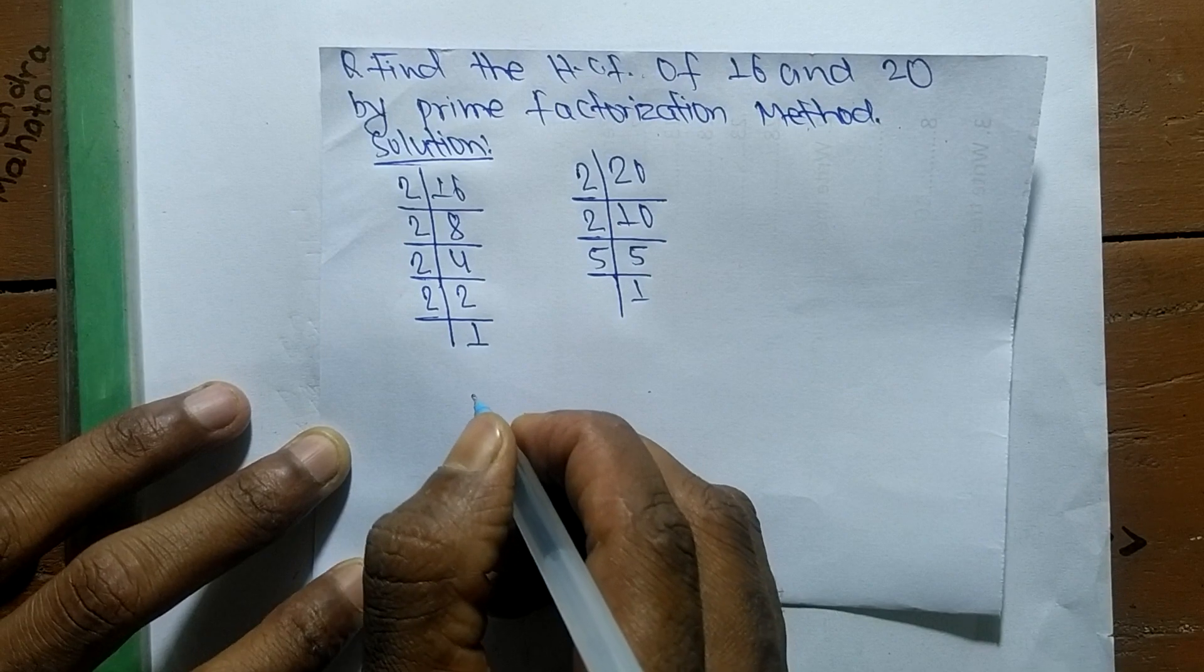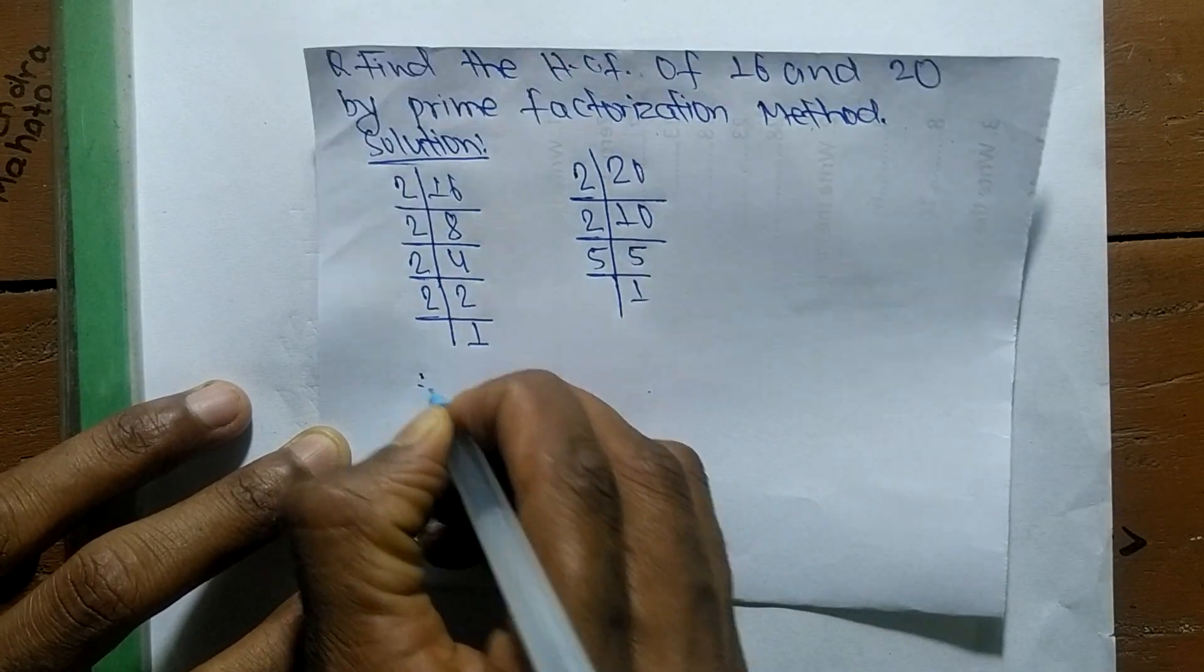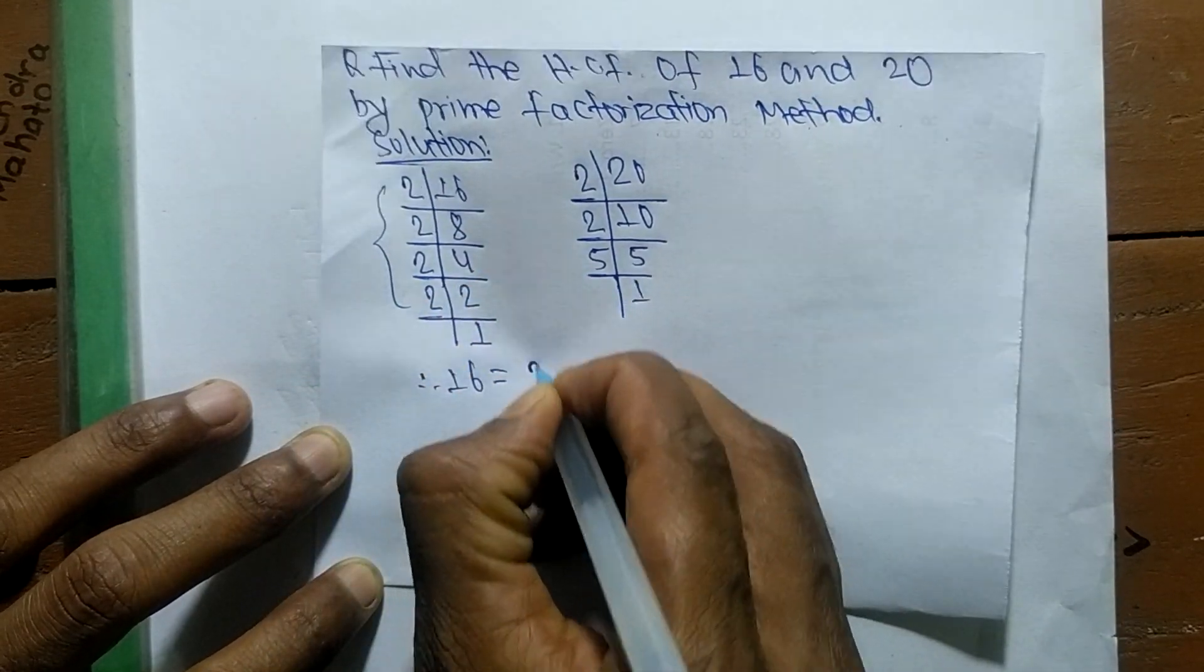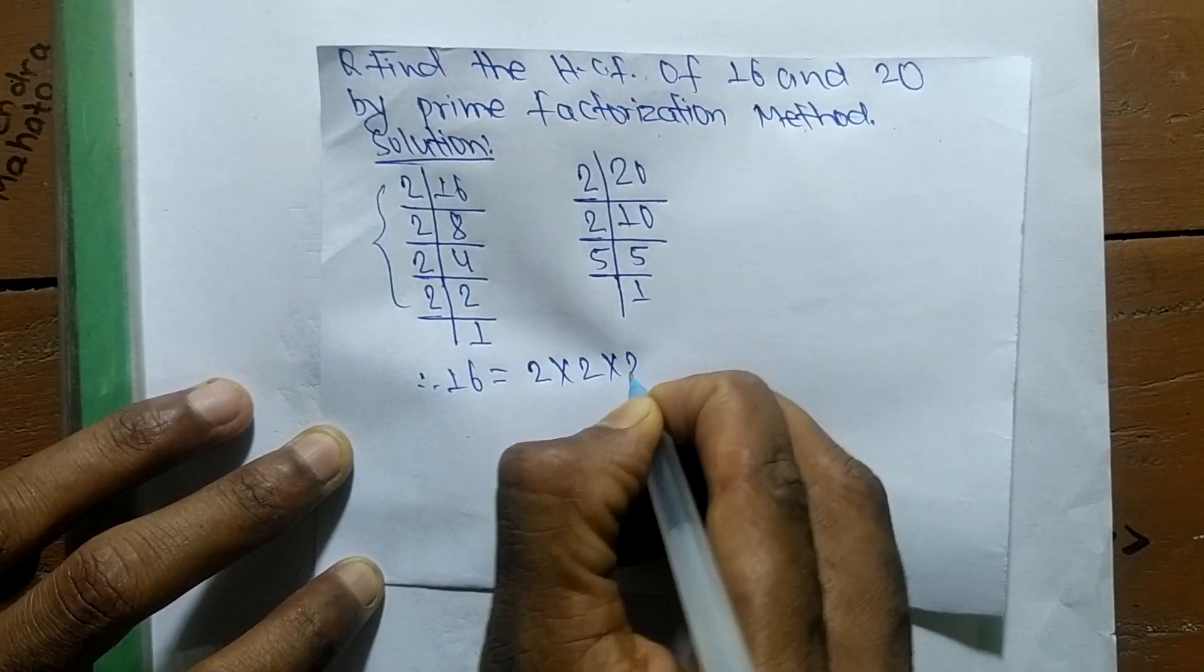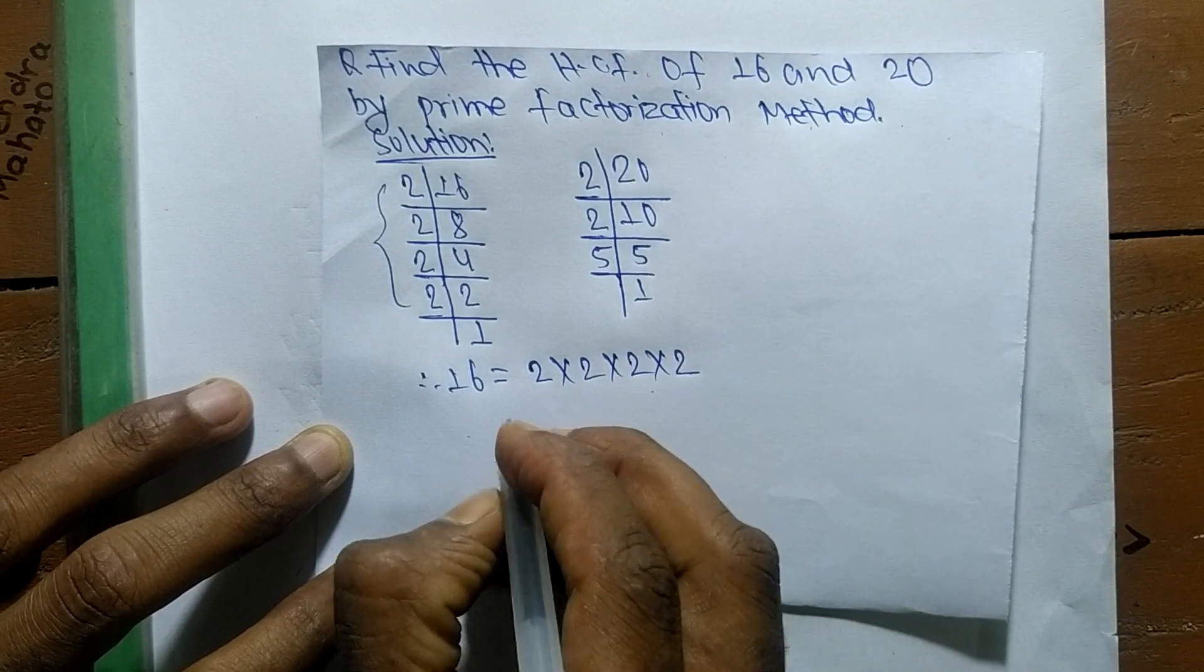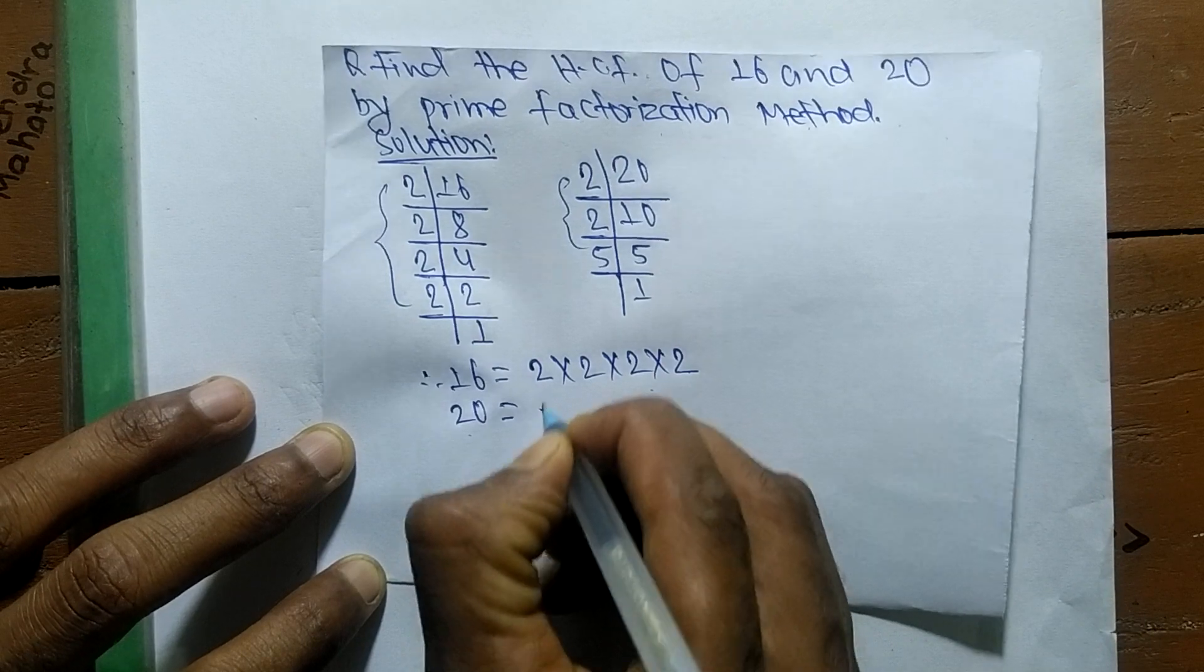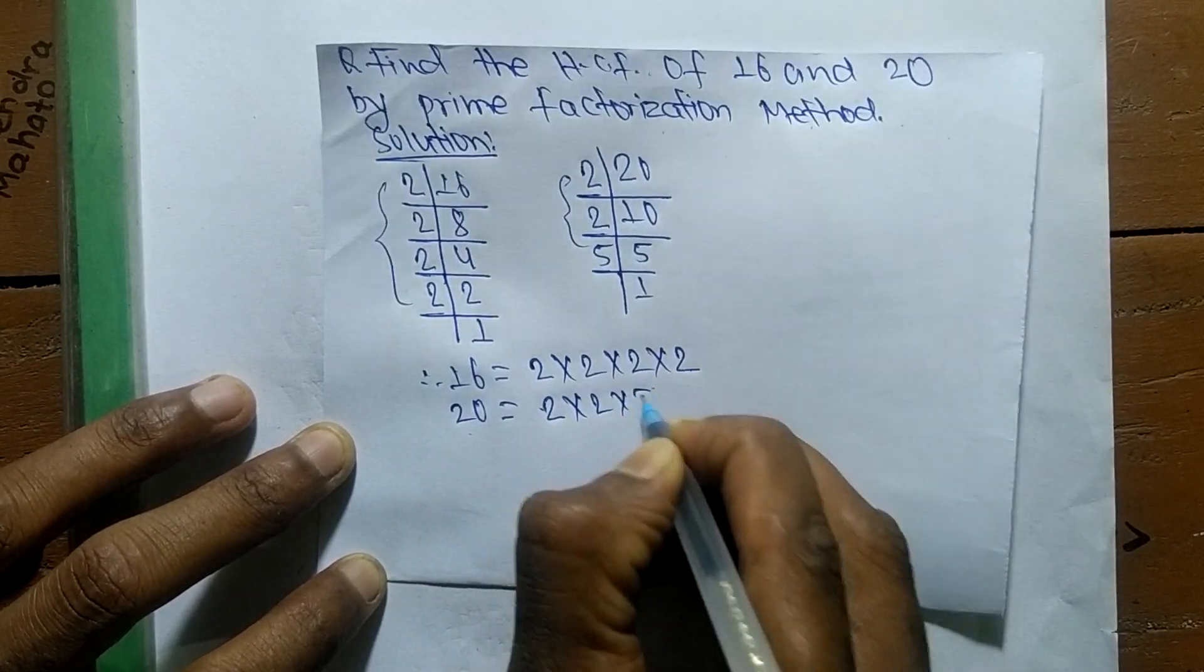So from these prime factors, we can write 16 is equal to 2 times 2 times 2 times 2. Likewise, 20 is equal to 2 times 2 times 5.